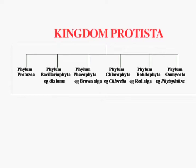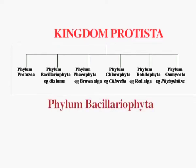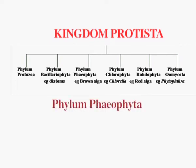They can either be autotrophic, saprophytic, parasitic, or they can feed on other organisms. Kingdom Protista includes six phyla: phylum Protozoa, phylum Bacillariophyta which includes all the diatoms, phylum Phaeophyta which includes the brown algae,